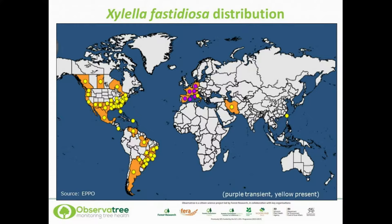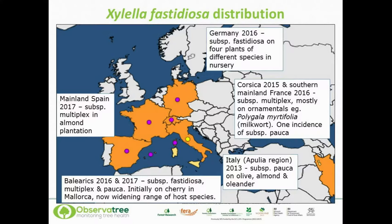Narrowing down to the European scale, the first symptoms of olive quick decline syndrome were observed in the Salento Peninsula on the south-eastern tip of Italy. In 2013, the disease-causing organism was identified as Xylella fastidiosa subspecies pauca, and it was later found to be molecularly identical to a strain isolated from oleander in Costa Rica. Further host plant species were identified in Apulia, including oleander and the ornamental plant Polygala myrtifolia, used as an amenity plant across southern Europe.